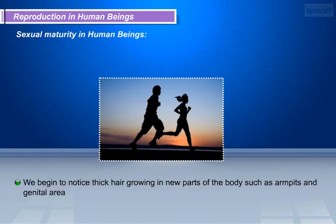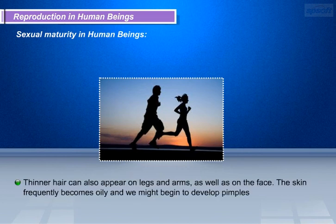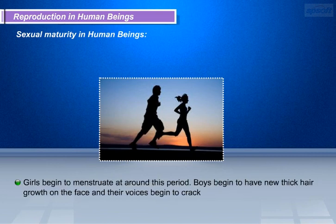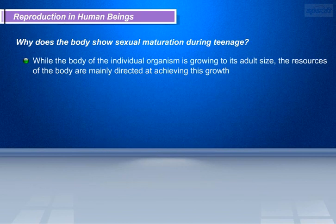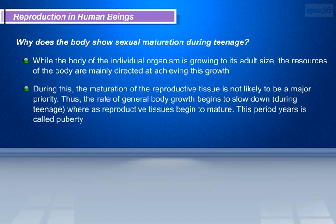We begin to notice thick hair growing in new parts of the body such as armpits and the genital area. Thinner hair can also appear on legs and arms, as well as on the face. The skin frequently becomes oily and begins to develop pimples. Girls begin to menstruate at around this period. Boys begin to have new thick hair growth on the face and their voices begin to crack. All of these changes are aspects of the sexual maturation of the body.